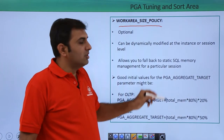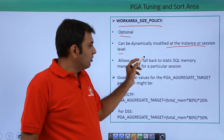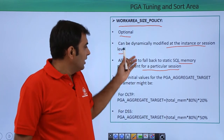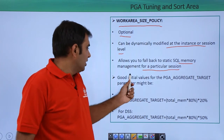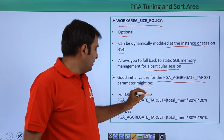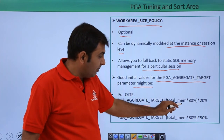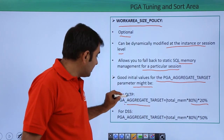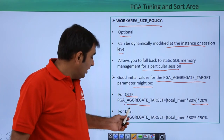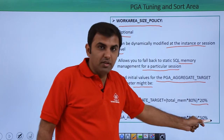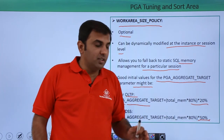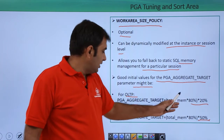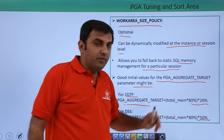Next, the work area size policy is an optional parameter that can be dynamically modified at the instance or session level. It allows you to fall back to static SQL memory management for a particular session. A good initial value for the PGA aggregate target for OLTP is total memory multiplied by 80 percent, then 20 percent of that. For OLAP or data warehouse environments, you can set it to 50 percent. For OLTP keep 20 percent, for OLAP keep 50 percent.